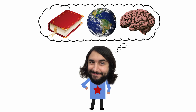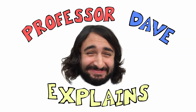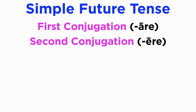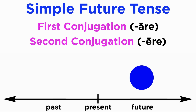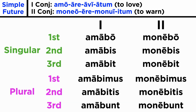Professor Dave explains. We learned how to conjugate the future tense of first and second conjugation verbs in a previous tutorial. We used it every time we wanted to describe an action projected into the future. You may remember that the infix B was added between the stem and the endings — it was the bo-bi-bi-bi-bi-bu pattern. Before we go on, let's refresh our memory.